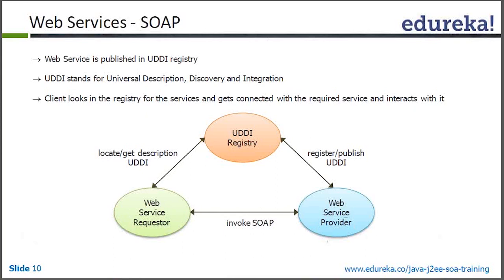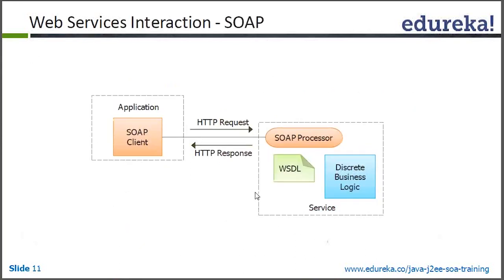It's like a real-time example — someone publishes with a shop, and the customer goes to the retailer and buys it. Now, SOAP is basically not used so much anymore; it is going down. But it's worth understanding the architecture and how it works.